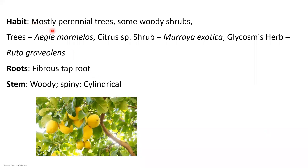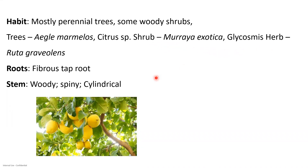Habit is mostly perennial trees; some woody shrubs are also found. An example of a tree member in the Rutaceae family is Aegle marmelos, commonly known as bael. Some citrus species have a shrubby appearance, and others like Murraya exotica and Glycosmis are also found. Herb examples include Ruta graveolens.